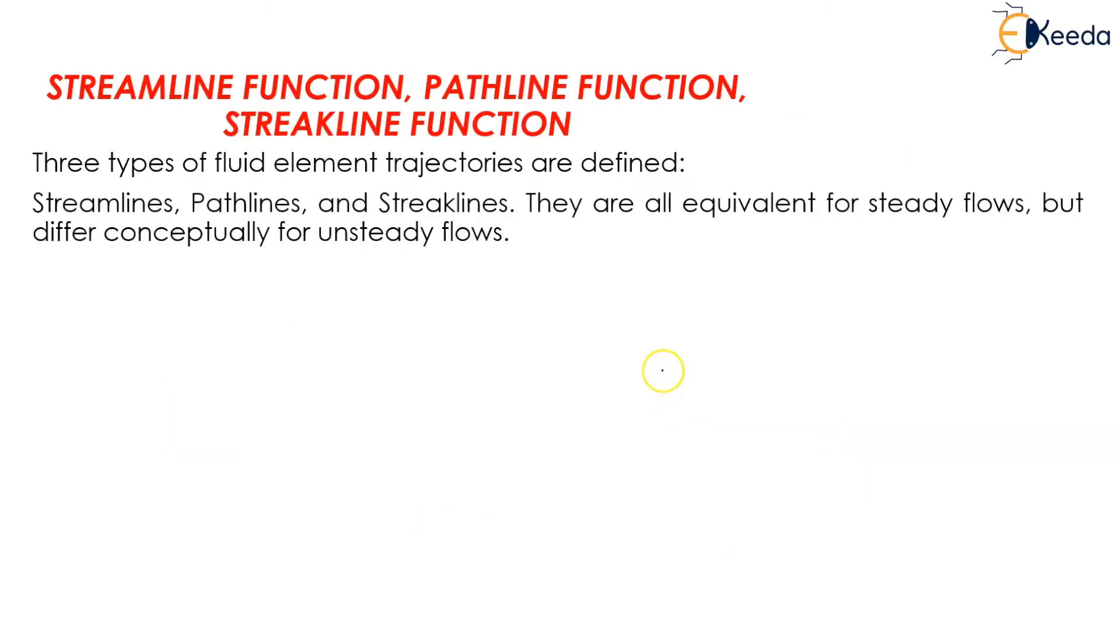There are three types of fluid element trajectories which are streamline, pathline, and streaklines. They are all equivalent for steady flow but differ conceptually for unsteady flow.